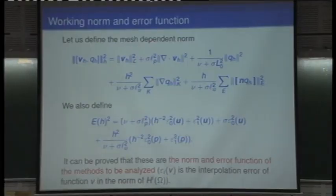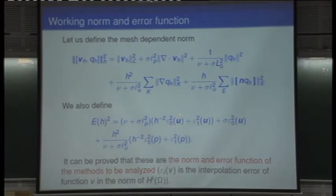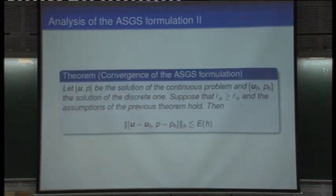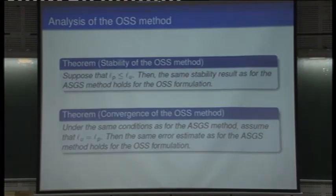This switching between functional settings will happen again for Maxwell's problem. The norm is where we prove stability and convergence; the error function is optimal — meaning the error behaves as the interpolation error. Epsilon_0 is the L2 interpolation error, epsilon_1 is the H1 interpolation error. We proved stability in that H-norm via an inf-sup condition, and optimal convergence in that norm. Both the algebraic subscale and orthogonal subscale methods give the same result, under certain assumptions on the constants.